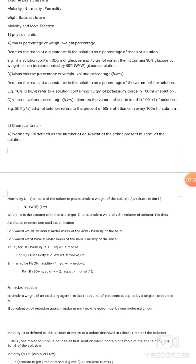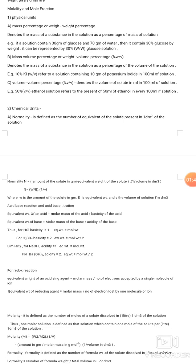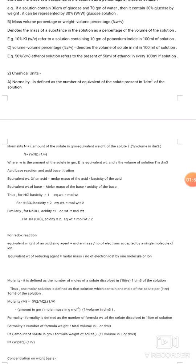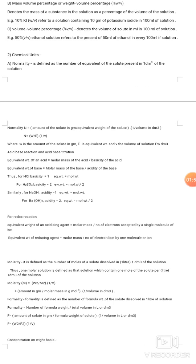Chemical units — Normality: One normality is defined as the number of equivalents of the solute present in one dm³ of solution. Normality N = (amount of solute in grams) / (equivalent weight of solute) × (1/volume in dm³), or N = W / E × (1/V), where W is the amount of solute in grams, E is the equivalent weight, and V is the volume in dm³.